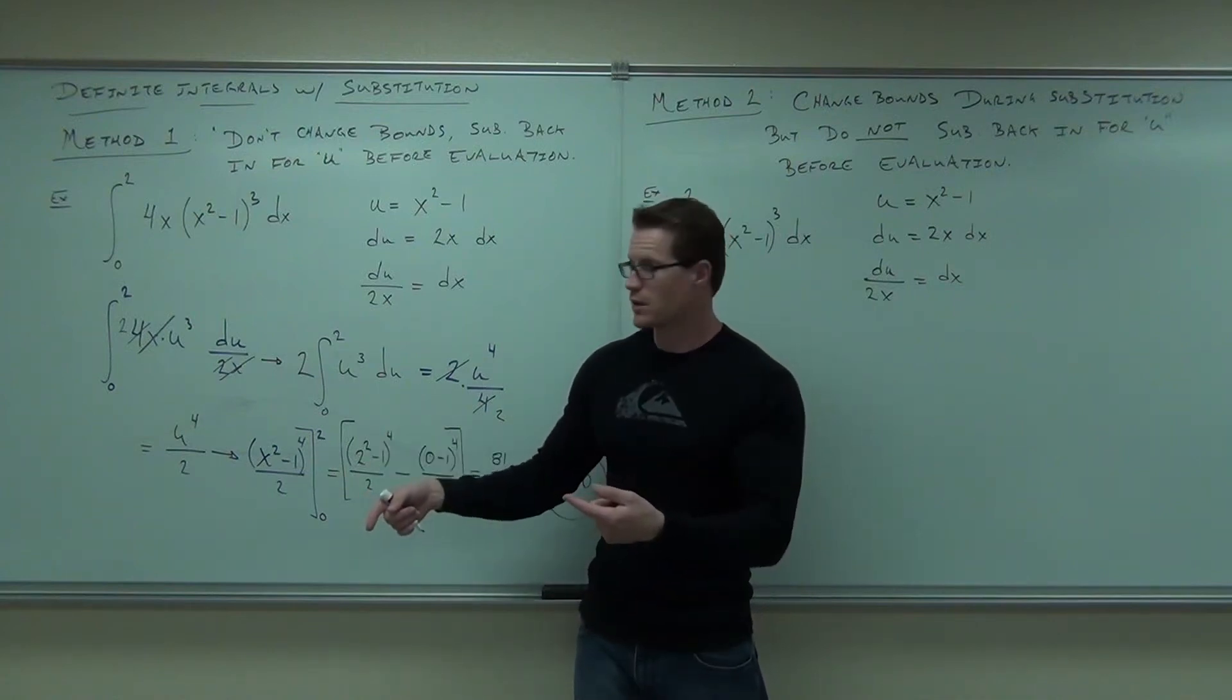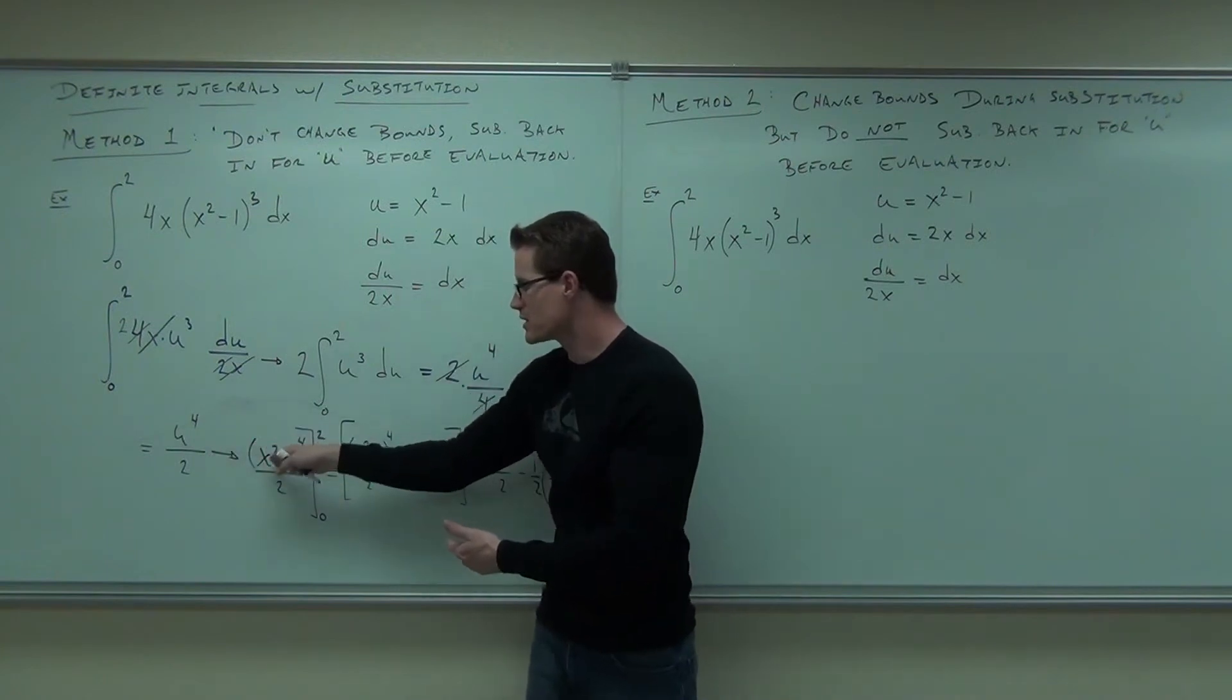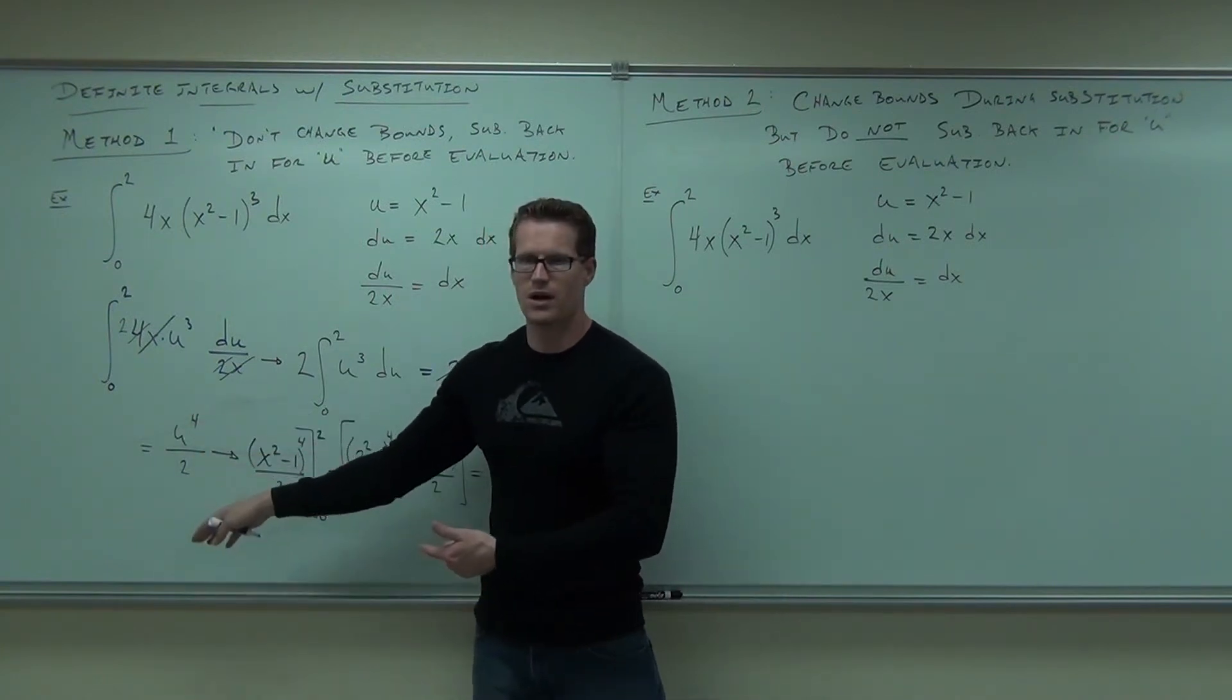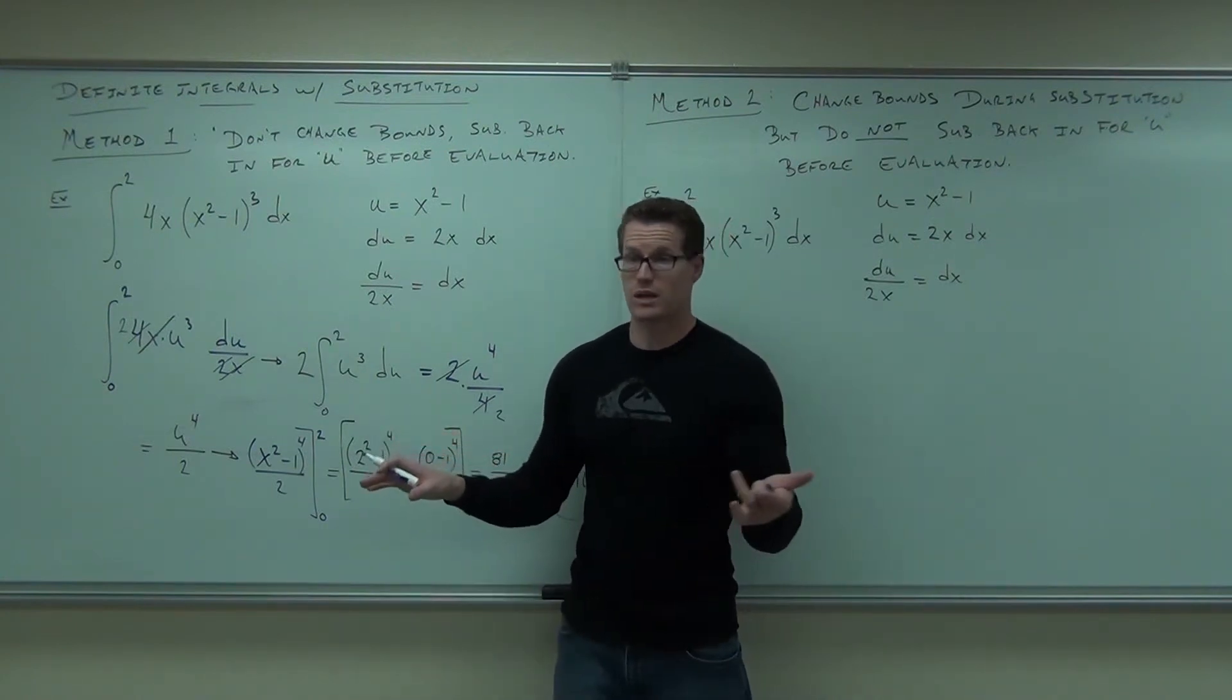Here you just do it beforehand, so that when you get your bounds, it's in terms of u, so you don't have to do this step. You just go directly from here. It's basically, do you want to do the work beforehand, or do you want to do the work after? It doesn't matter, you're going to do the work either way.